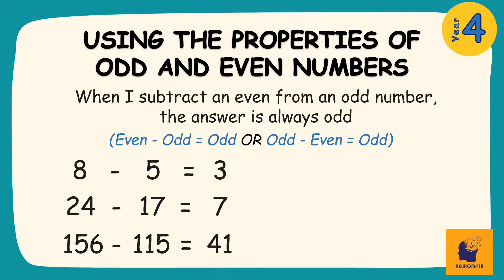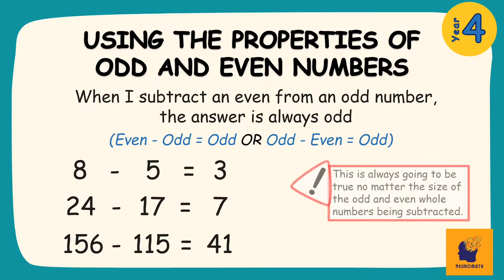Like with the previous conditions, this is always going to be true no matter the size of the odd and even whole numbers being subtracted. So I could be subtracting a 5-digit odd whole number from a 6-digit even whole number, and my answer will still be an odd whole number.